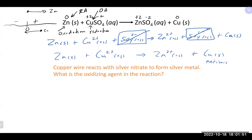The net ionic equation shows zinc transferring two electrons to the copper. Copper²⁺ picks up those two electrons and becomes copper with no charge (zero oxidation state). When zinc loses those two electrons, it becomes Zn²⁺. This is the transfer of electrons — one of the reasons why a reaction takes place.